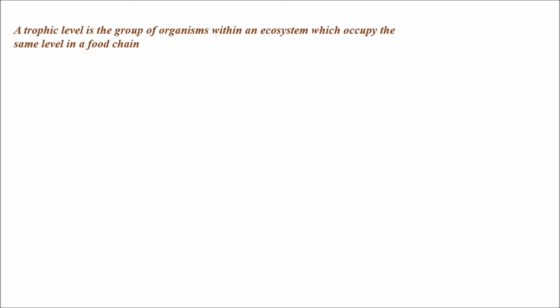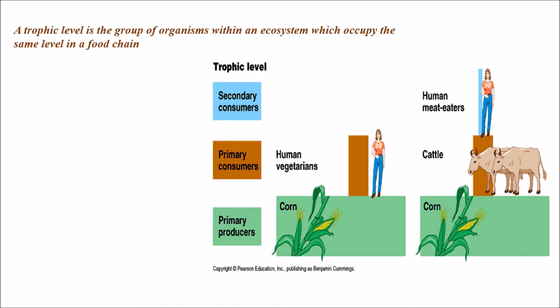Trophic level is the group of organisms within an ecosystem which occupy the same level in a food chain. A community of organisms at the same level with common food habits forms a trophic level. We can see the image here showing trophic levels.